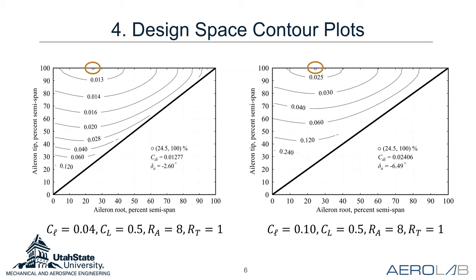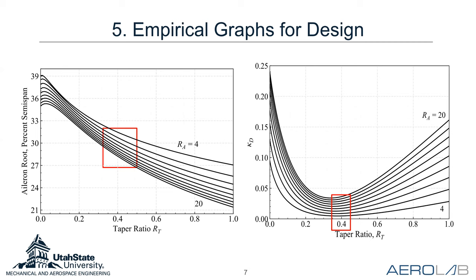The aileron root can vary for optimal induced drag, but the aileron tip is always at the wing tip. For the rest of the analysis, we limited the aileron tip to coincide with the wing tip. Using the numerical lifting line method over a wide range of wing cases — considering lift coefficient, rolling moment coefficient, aspect ratio, and taper ratio — we found that optimal aileron roots for a single aspect ratio and taper ratio could be averaged across lift and rolling moments with less than 1% change in induced drag.